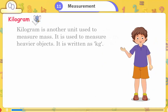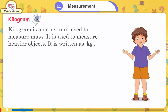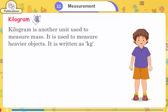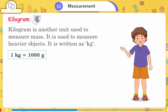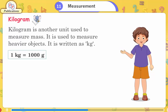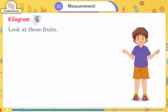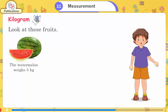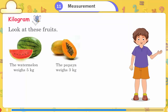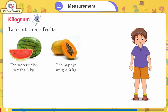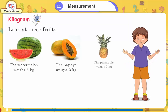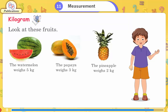Kilogram is another unit to measure mass, used for heavier objects, written as kg. One kilogram is equal to 1000 grams. For example, a watermelon weighs 5 kg, a papaya weighs 3 kg, and a pineapple weighs 2 kg.